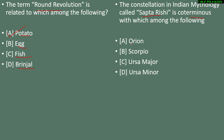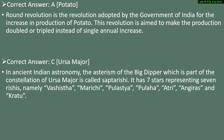The correct answer for the constellation question is option C, Ursa Major. Round Revolution is the Government of India name for the increase in production of potato, aiming to produce potato in double and triple amounts instead of a single annual increase.